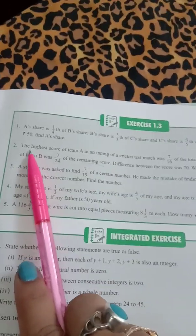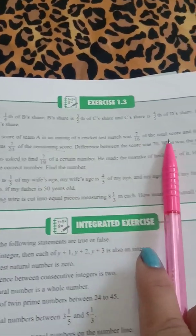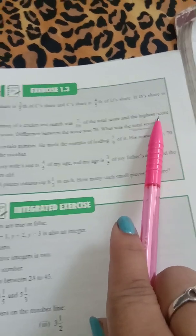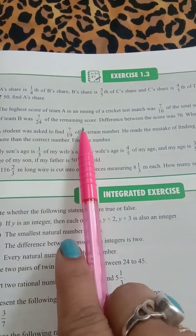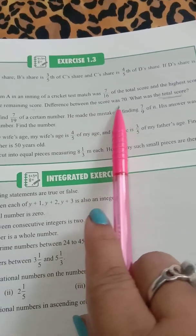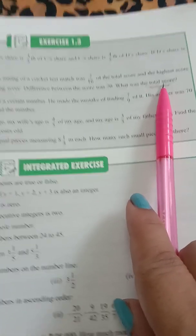Question number 2: highest score of team A, 7 by 16 of total score. Highest score of team B, 7 by 24 of the remaining score. Difference of the score 70, you have to find the total score.